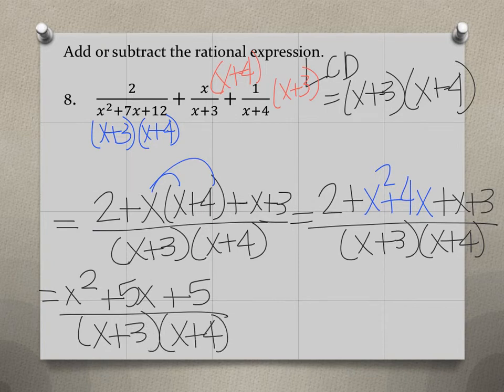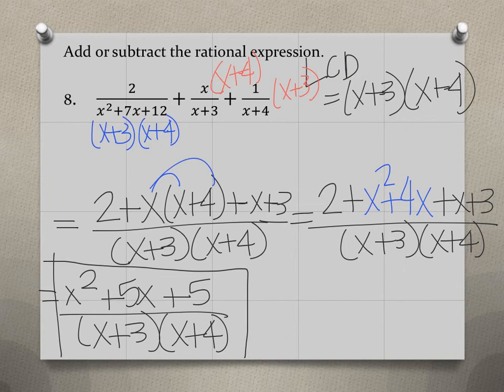Now if the numerator here was factorable, you would want to factor it and see if you have any common factors to cancel out. But the numerator here is not factorable. So this will actually be our final answer: x squared plus 5x plus 5 all divided by x plus 3 times x plus 4. And there's no need to multiply the binomials in the bottom. You can just leave it as it is.